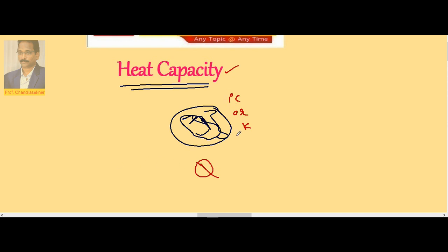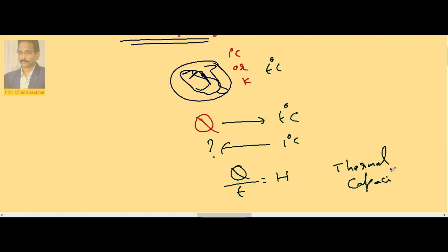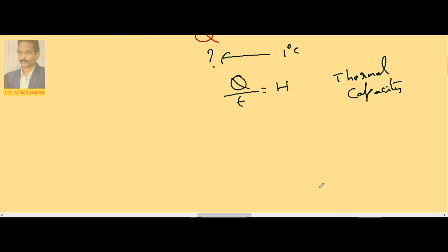Now instead of 1 degree centigrade or 1 Kelvin, let us imagine the temperature rises T degrees centigrade. When I supply Q amount of heat, temperature changes by T degrees centigrade. For 1 degree centigrade change, what is the heat required? This is Q by T. This is called heat capacity or thermal capacity. So thermal capacity or heat capacity is the amount of heat required to raise the temperature of the given substance through 1 degree centigrade. For T degrees centigrade if Q is supplied, then for 1 degree centigrade it is Q by T.